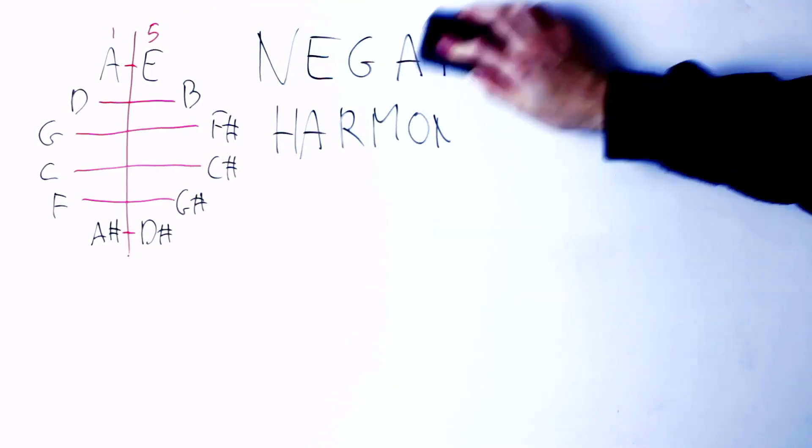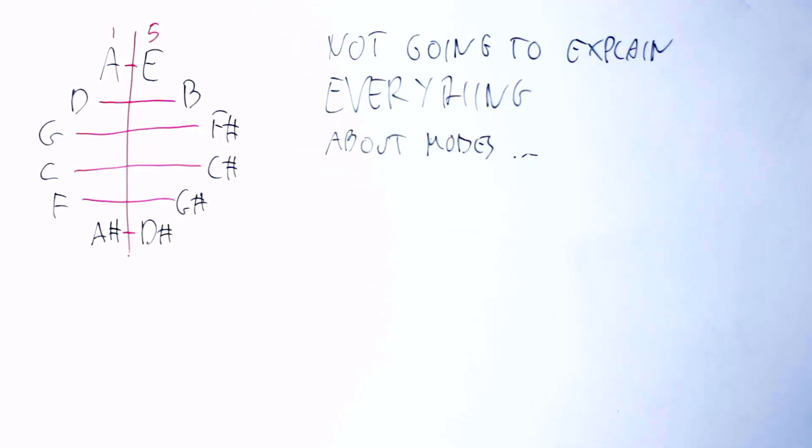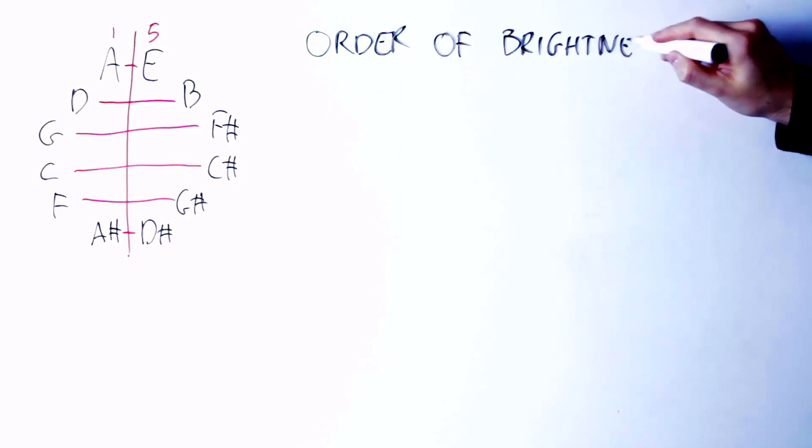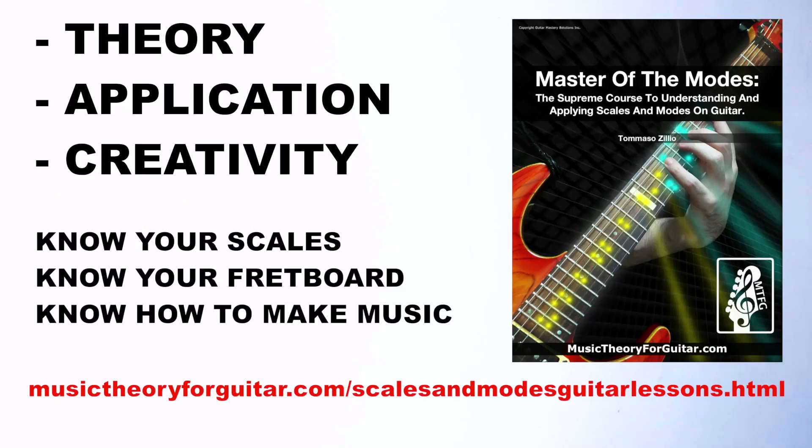In this video, I'm also not going to explain everything about modes. There's lots to be said about modes. But I'm going to introduce a tool to understand modes called the order of brightness. This tool is part of the core system of my course, Master of the Modes, which is the course where I explain everything that is to know about modes.